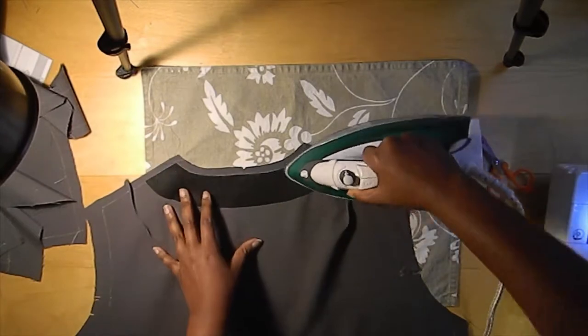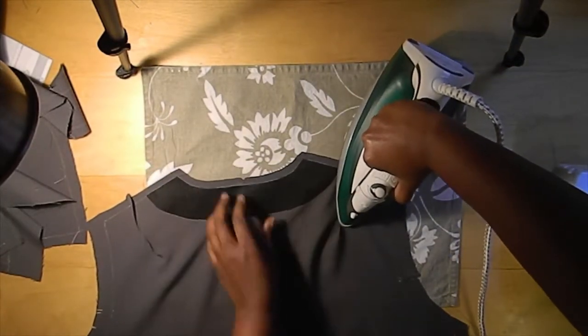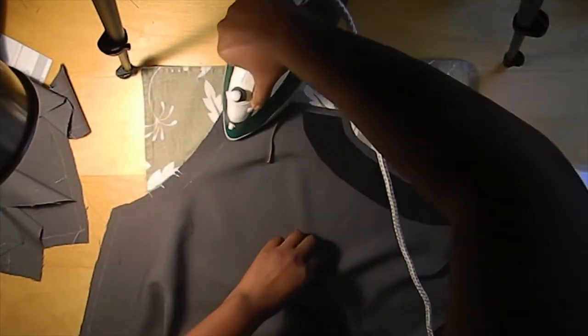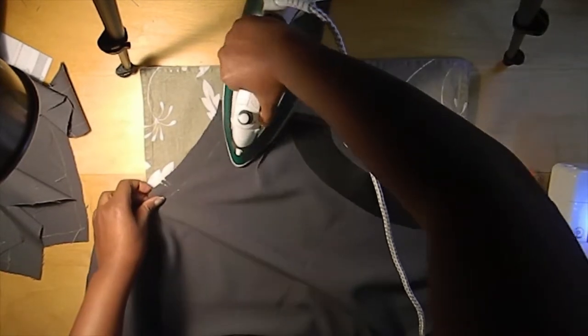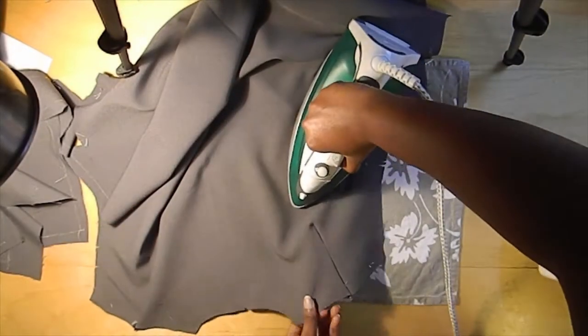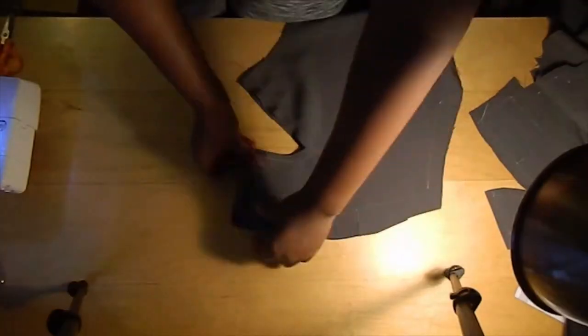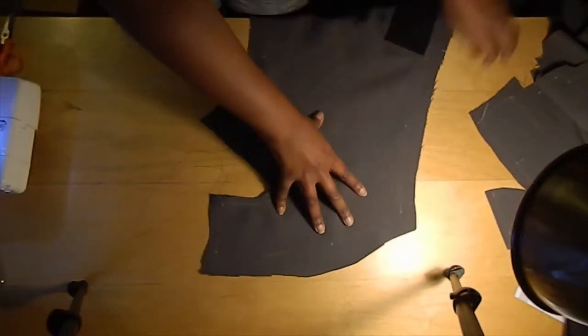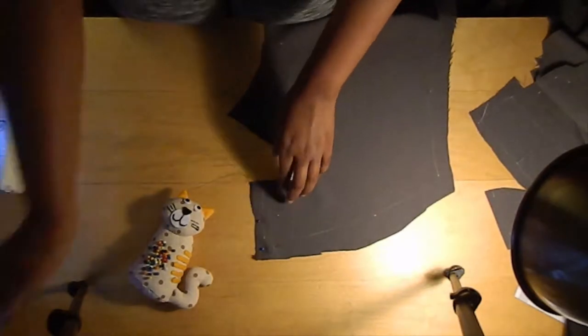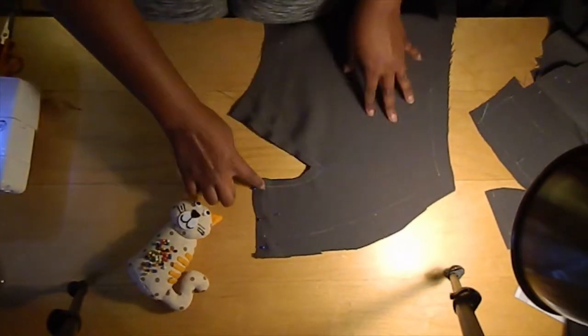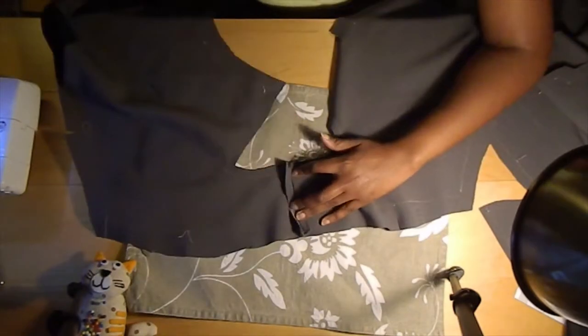After that, iron. Always remember to iron as you work because the ironing kind of keeps your material in form. For darts at the front at the top you want to iron them inwards, and then darts at the side you want to iron them downwards. Next thing I'm going to do is sew together my front pieces and iron it down to flatten it out.